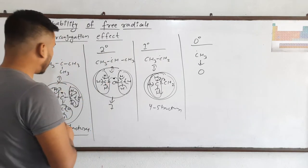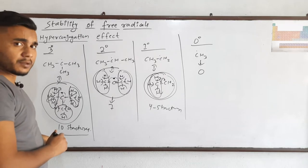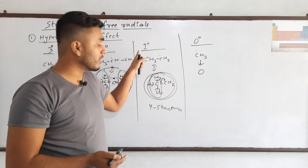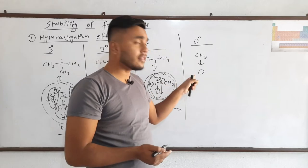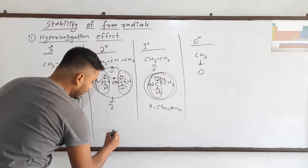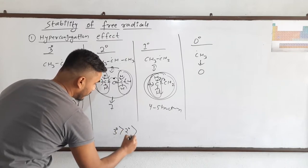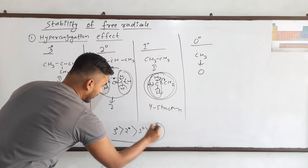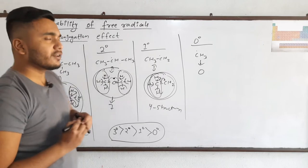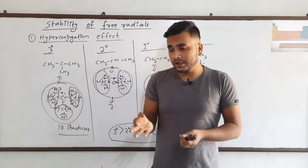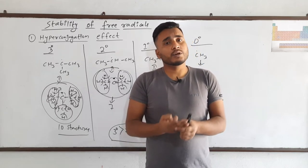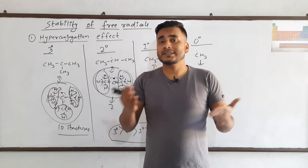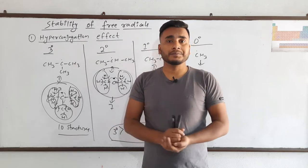By this theory, three degree free radicals have the highest number of structures — 10; two degree have 7; one degree have 4; and zero degree has 0. So by hyperconjugation theory, three degree free radicals are more stable than two degree, which is more stable than one degree, which is even more stable than zero degree free radicals. Three degree free radicals are the most stable species in simple free radical form.